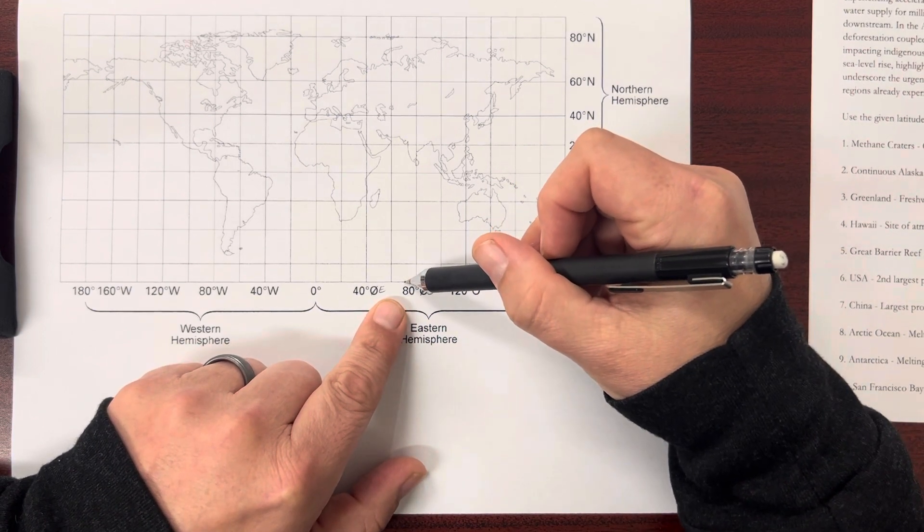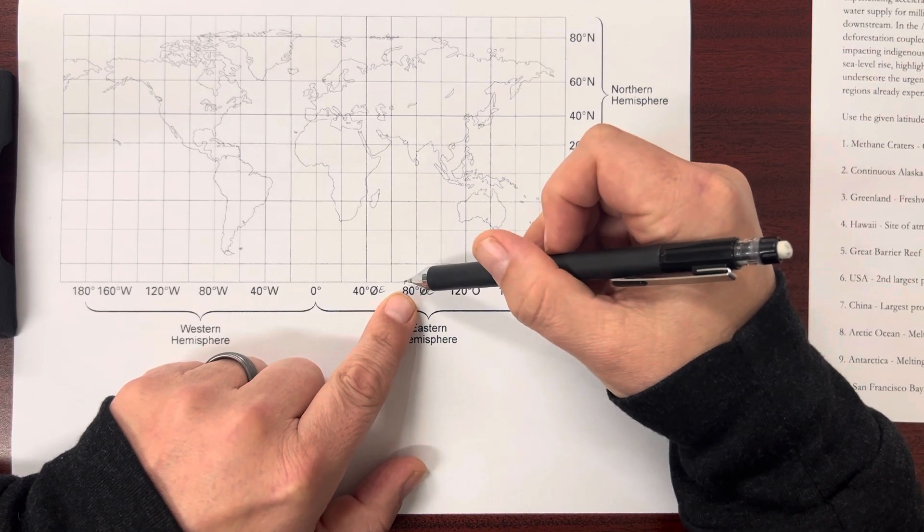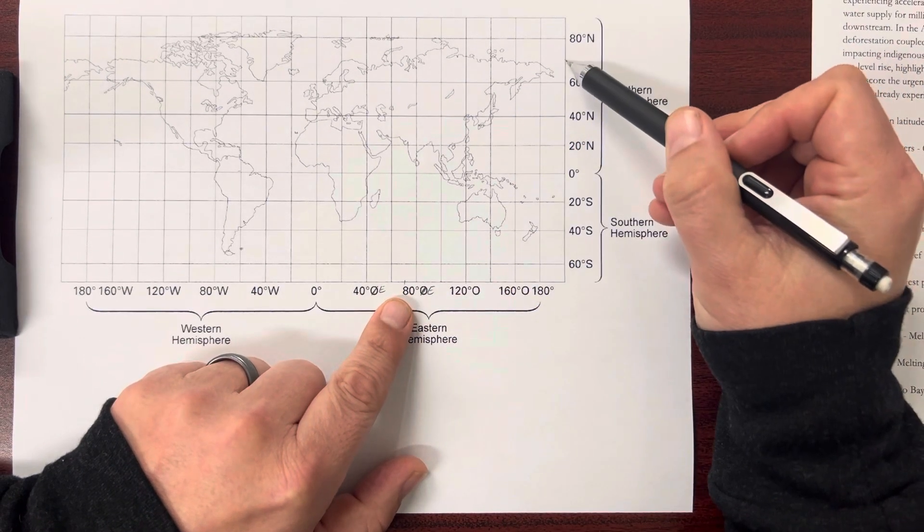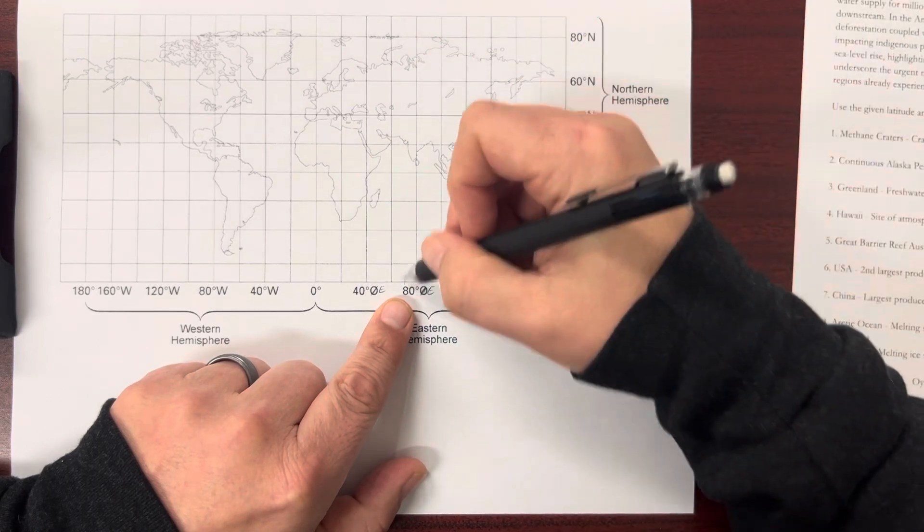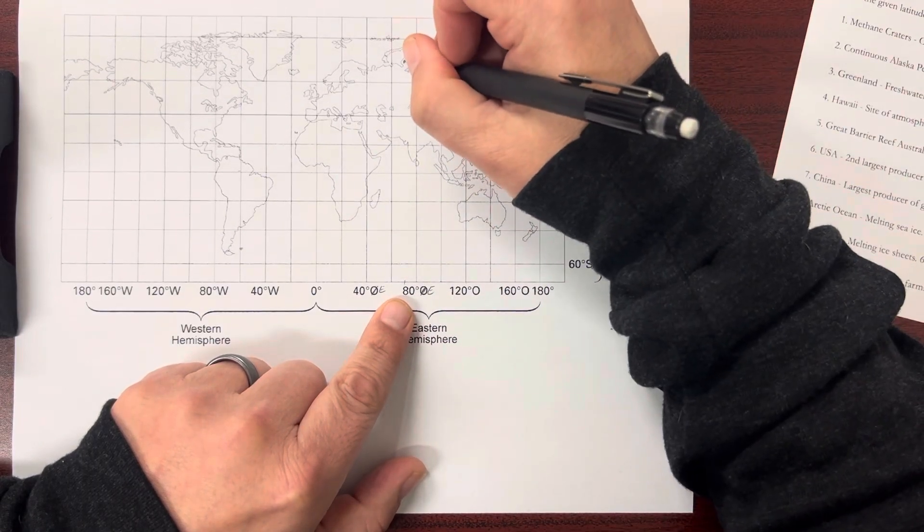80. So 70 is right about there, 70 east. And I just go over and up, and they meet right about here.